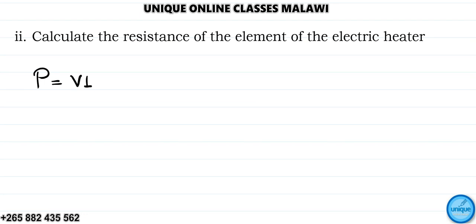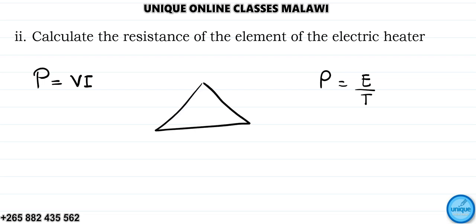Formula: power equals voltage times current. Power equals energy divided by time. Using our famous triangle of Ohm's law: voltage equals current times resistance.